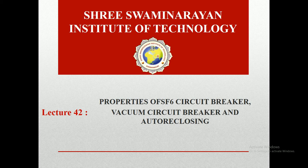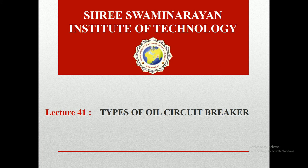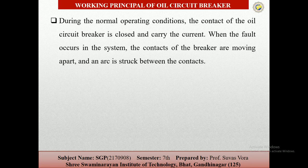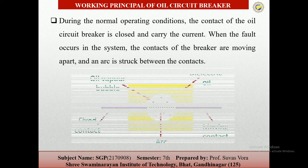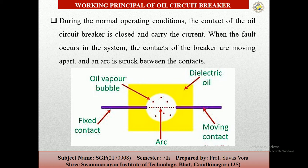In the last lectures, we covered the types of oil circuit breakers. During normal operating conditions, the contact of the oil circuit breaker is closed and carries current. When a fault occurs in the system, the contacts of the breaker move apart and an arc is struck between them. The oil circuit breaker is different from other circuit breakers because inside the tank there is oil, which is used to destroy the arc.